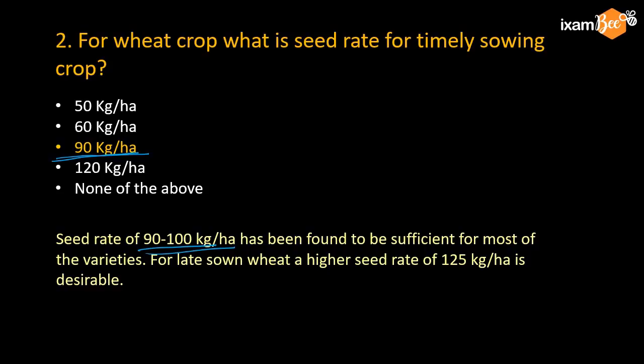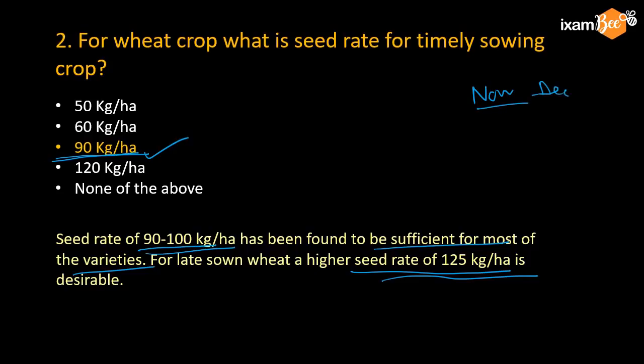So 90 to 100 kg per hectare is sufficient for most varieties. There may be slight variation depending on the variety, irrigation, and land type — around plus or minus 5-10 kg. The range is 90 to 100 kg per hectare for timely sowing. For late sowing, that is a different consideration. The right time to sow wheat is November and sometimes into the first week of December.